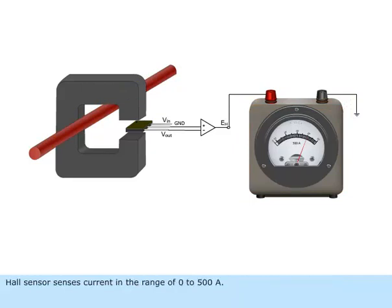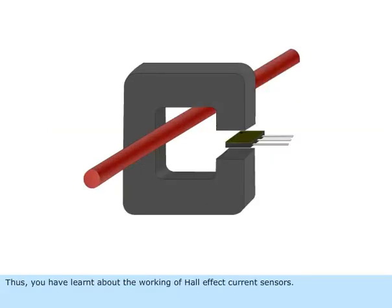Hall sensor senses current in the range of 0 to 500 amps. Thus, you have learned about the working of Hall effect current sensors.